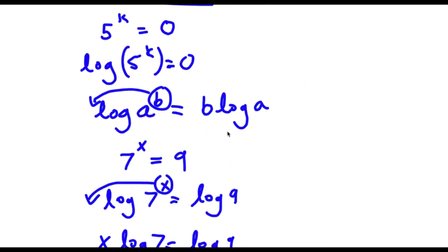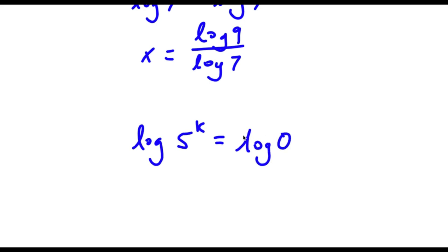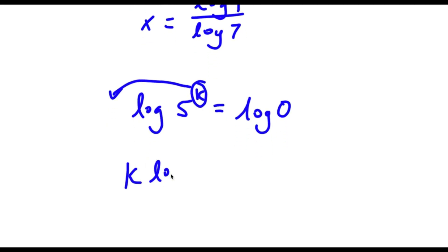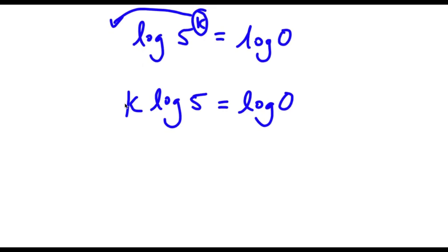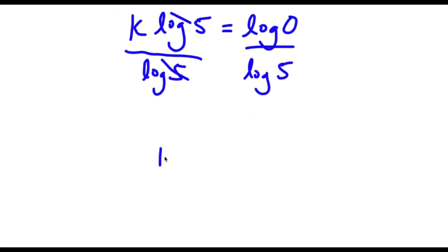Going back to our problem, we had log of 5 to the power of k is equal to log 0. We can move exponent k to the front of the logarithm. So now I have k times log 5 is equal to log 0. We're solving for k, so I'm going to divide both sides by log 5. These two will cancel out and I'll be left with k is equal to log 0 over log 5.